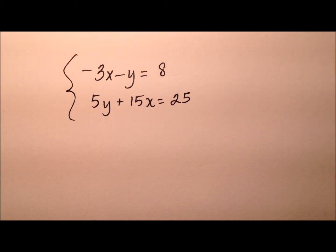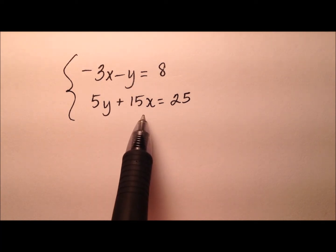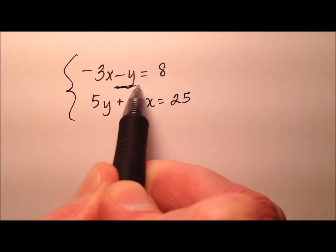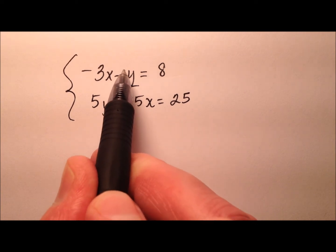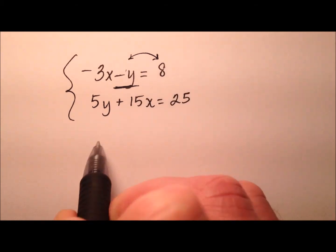And here we are in the second example. We're going to solve it by substitution again. And using substitution, I'm looking for a variable that's easy to isolate. And it looks like this y is easy to isolate. It's a negative 1 for a coefficient.